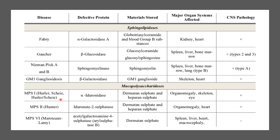In Hurler disease, the enzyme deficient is alpha-iduronidase. Because it is deficient, the substances such as dermatan sulfate and heparan sulfate are not broken down, thereby leading to organomegaly — that is, enlargement of the organs. It also affects the skeleton, eyes, and the CNS.